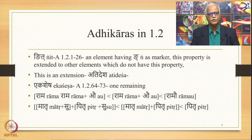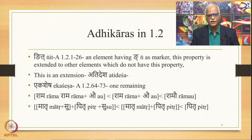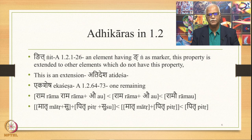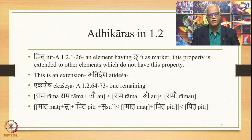In 1.2 there are two important Adhikaras. The first one is Nghit, from 1.2.1 to 1.2.26. An element having Ngh as marker is called Nghit. This property is extended to other elements which do not have this property, and this is what is described in this big section. One of the sutras we have already seen is Sarvadhatu Kamapit, which falls into this particular section — a unique example of an Adhikara covering an extension.